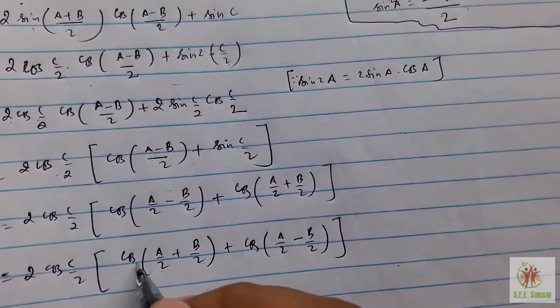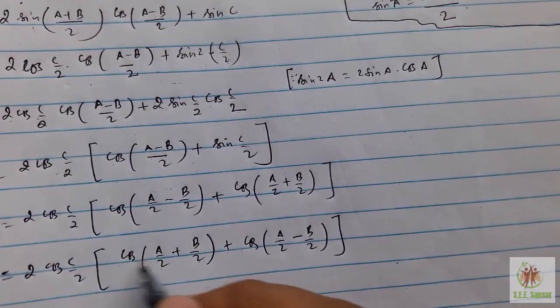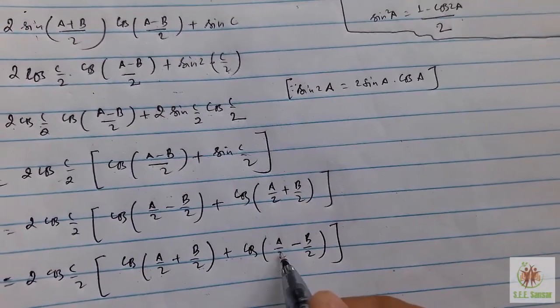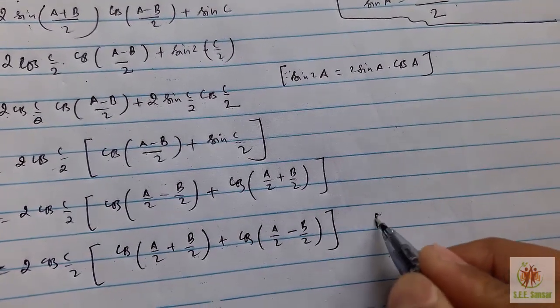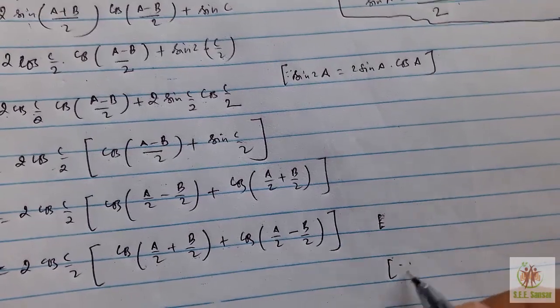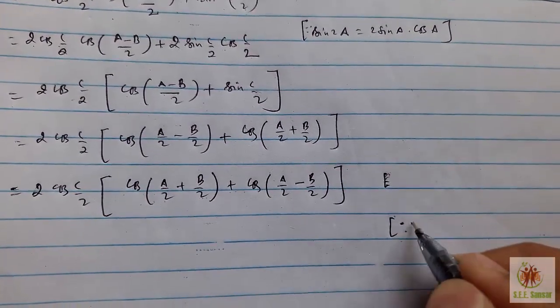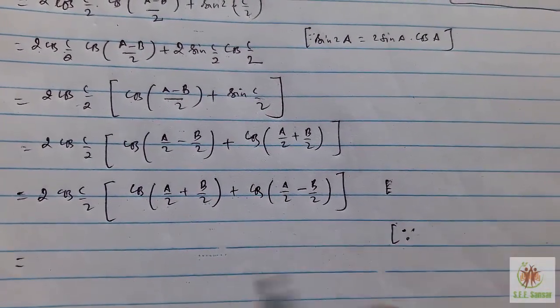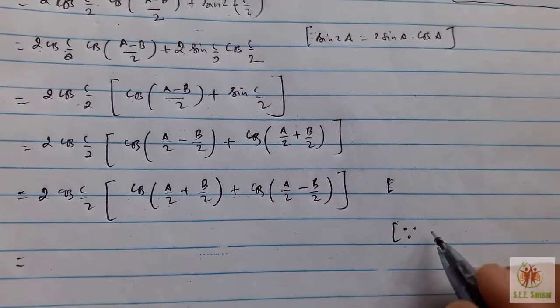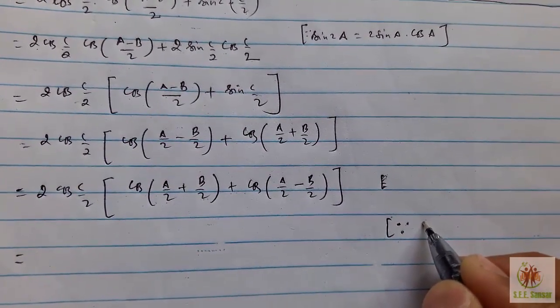When you take this as A/2 as cos A and B/2 as B, then cos(A+B) + cos(A-B), do you remember the formula? The formula of cos(A+B) + cos(A-B) equals 2cos A cos B.